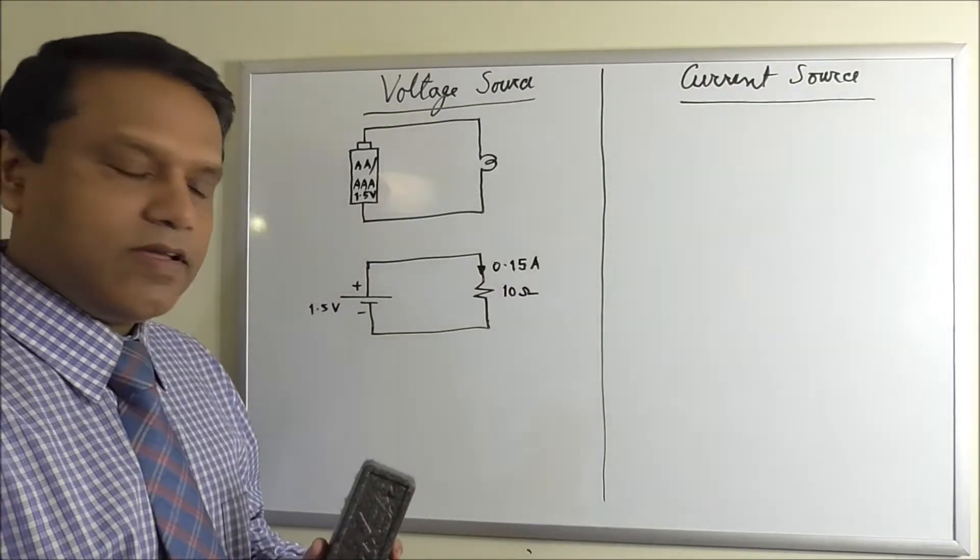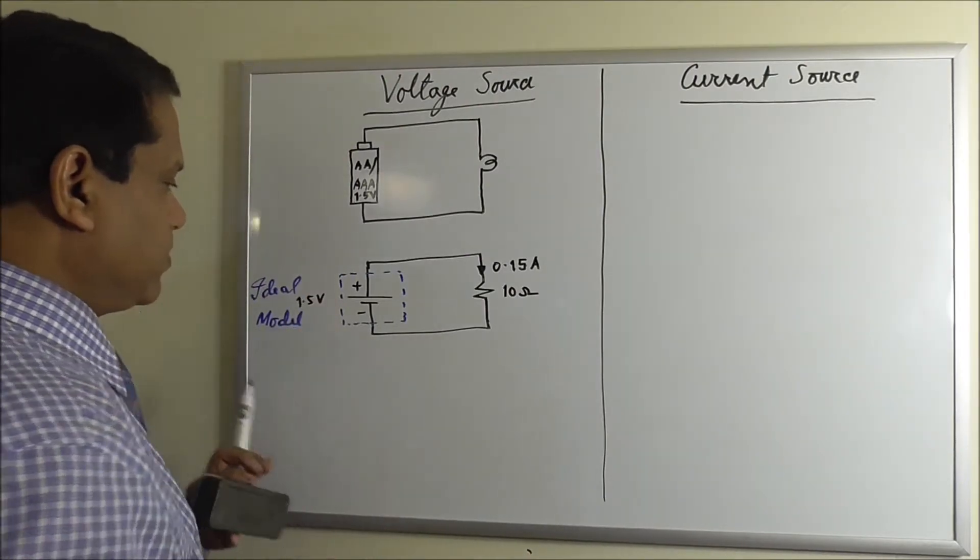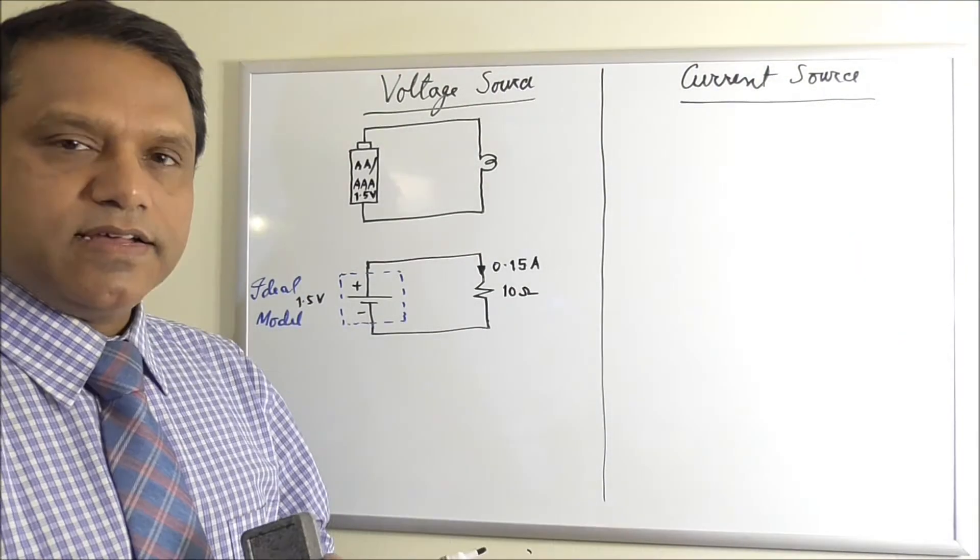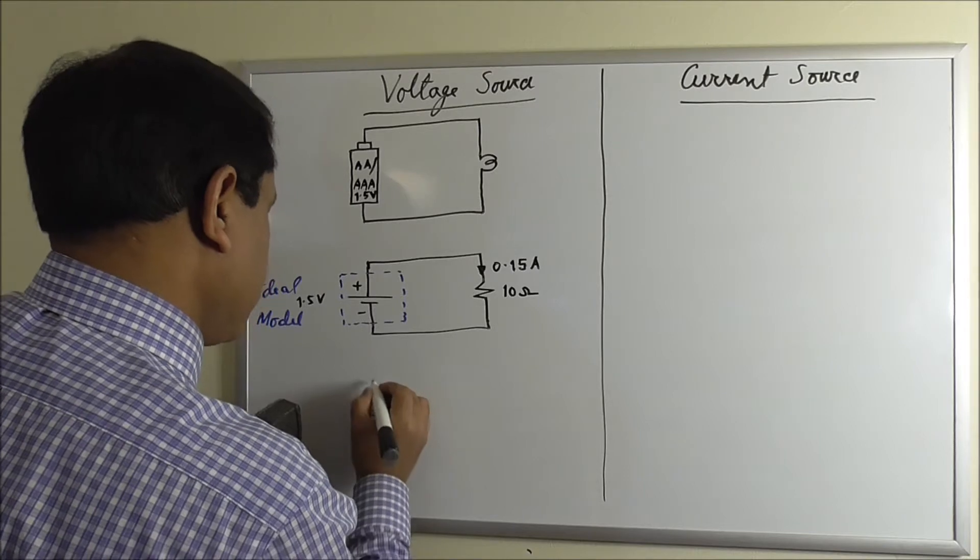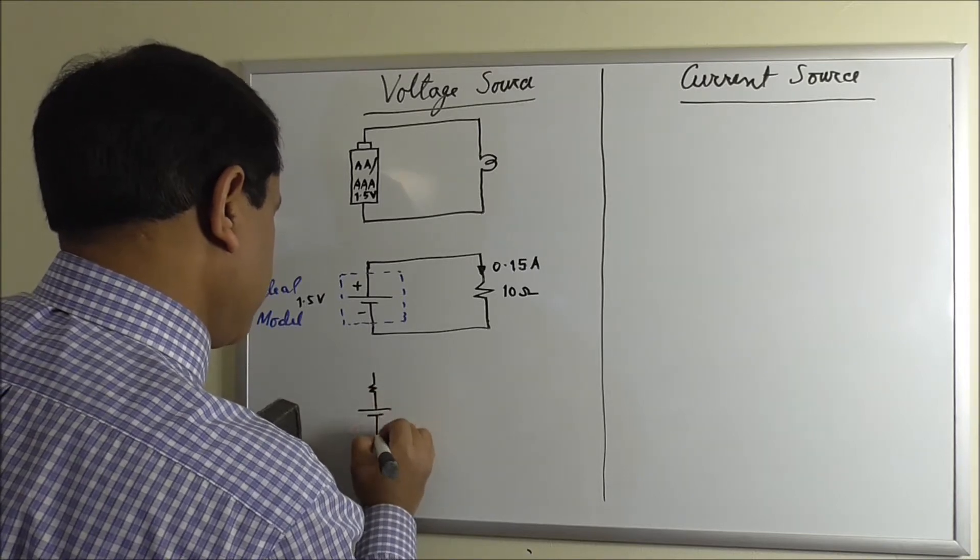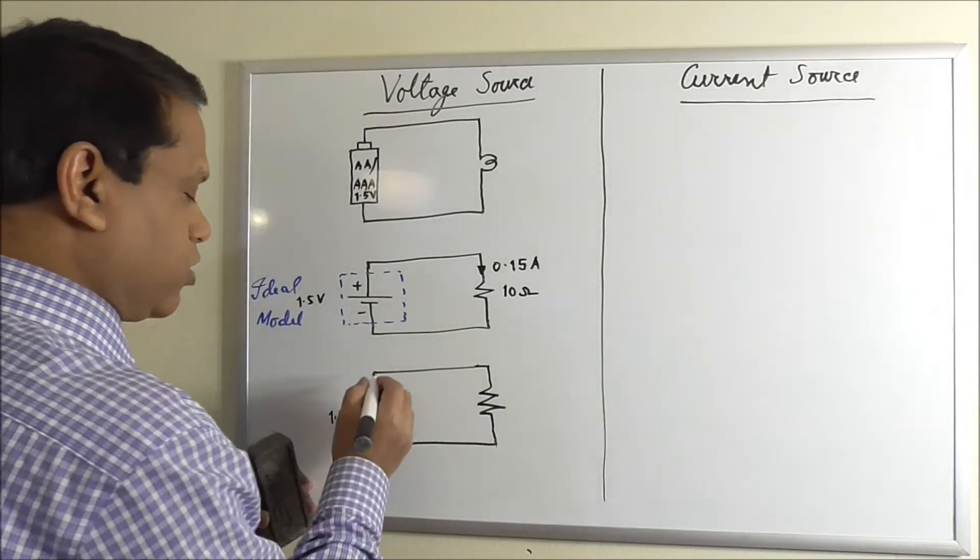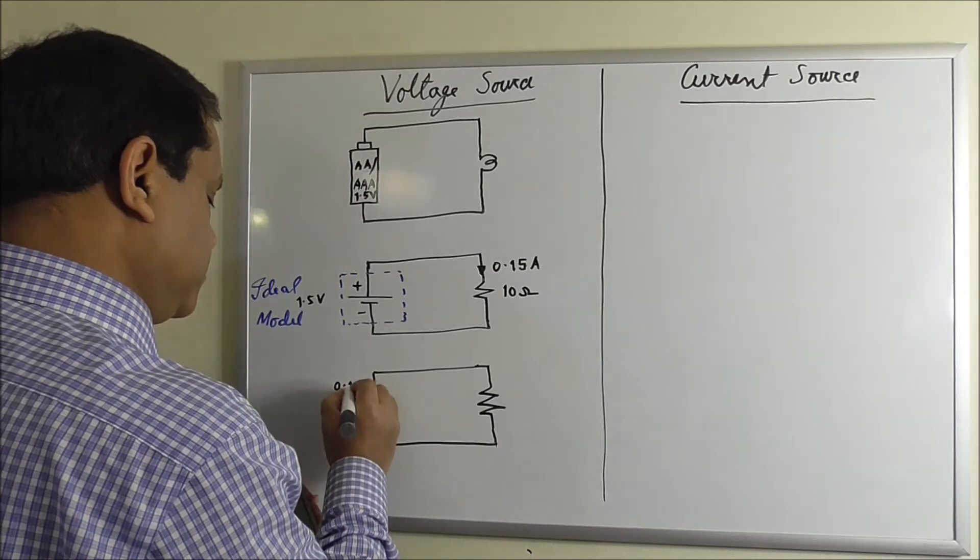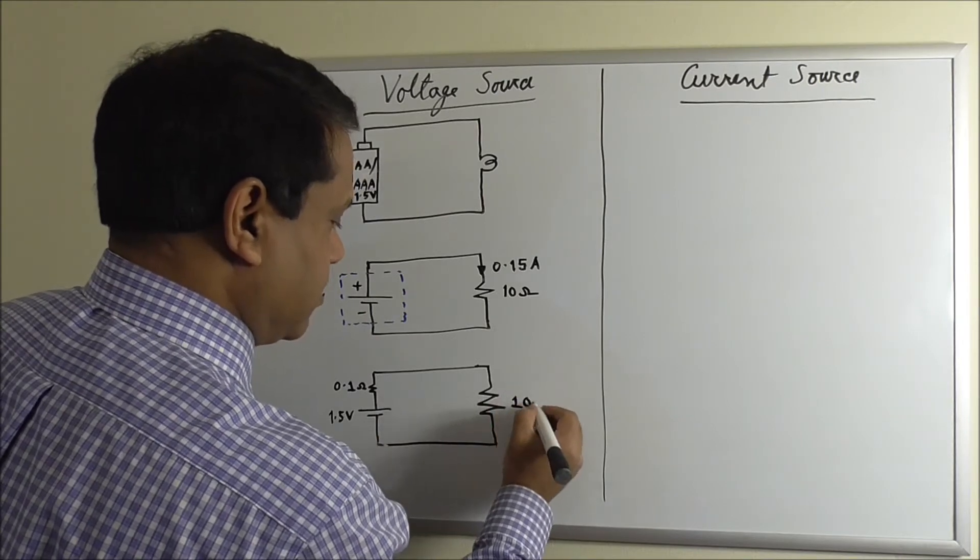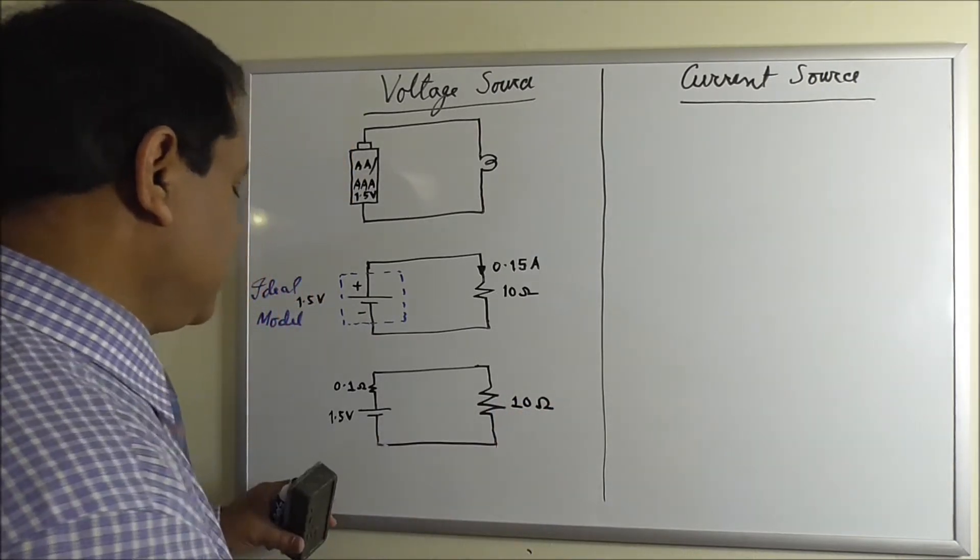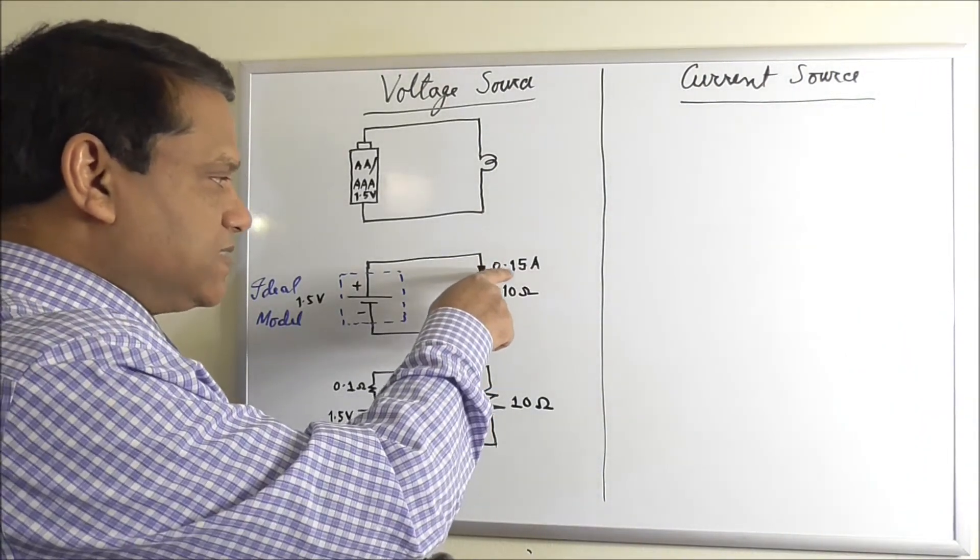Now this model of the battery is called ideal model. In reality, every battery has a small resistance inside it. Let's assume that the small resistance is 0.1 ohm, and this is still 10 ohm. So now if we use ohm's law, we find the current is less than 0.15 ampere.